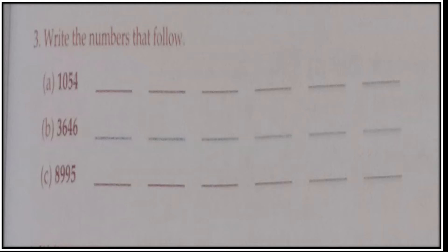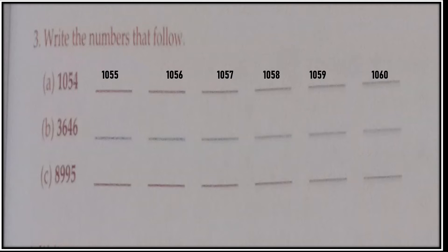Now see this question, children — write the numbers that follow. You have to write the forward counting. Starting with 1, 0, 5, 4 — that is 1054. You make changes at the ones place. So the next numbers will be: 1055, 1056, 1057, 1058, 1059, and then 1060.